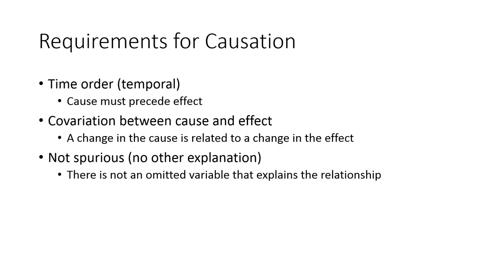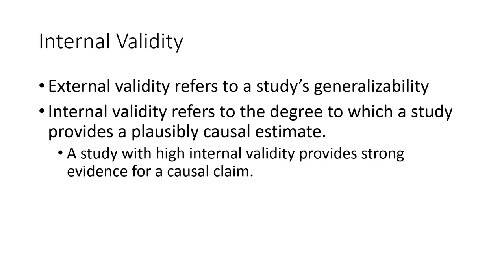So these are our three requirements: time order, covariation, and a non-spurious relationship. If you can design a study that can prove all three of these, you can make a strong case for causality. Now before we leave this concept, let's introduce one term that we can use to describe the degree to which a study accomplishes this. And that's the idea of internal validity. You may be familiar from previous lectures on the idea of external validity. If you recall, external validity was just the idea about the way in which a study can be generalized. So it gave us some indication of the degree to which the findings of a study could apply to other situations, other groups, other times.